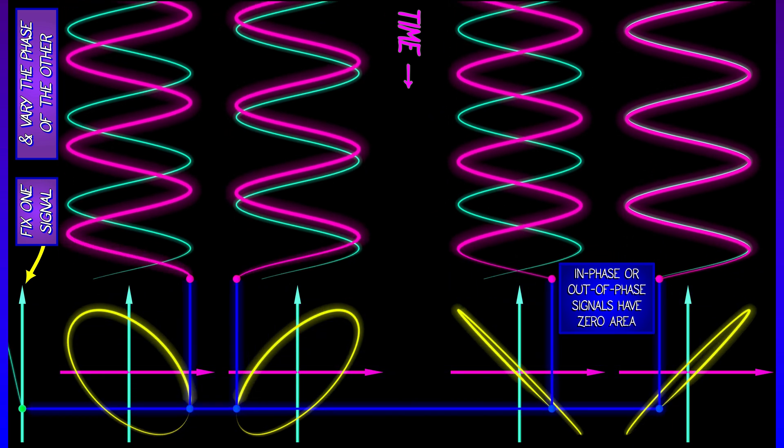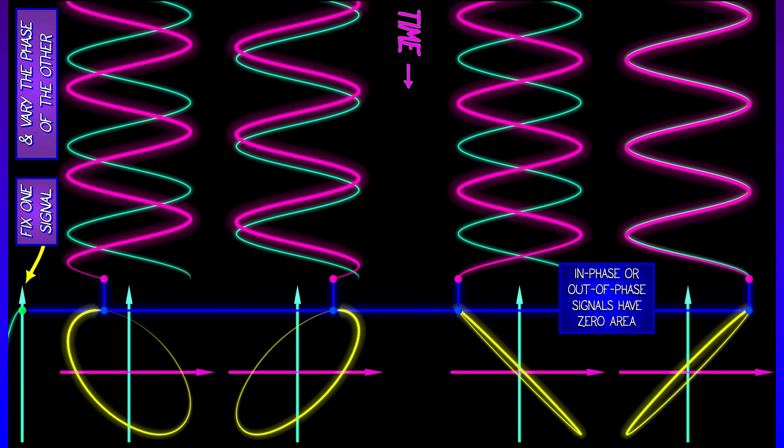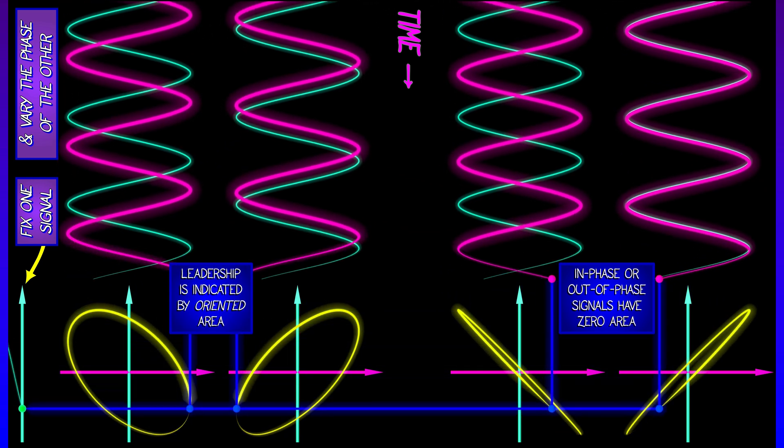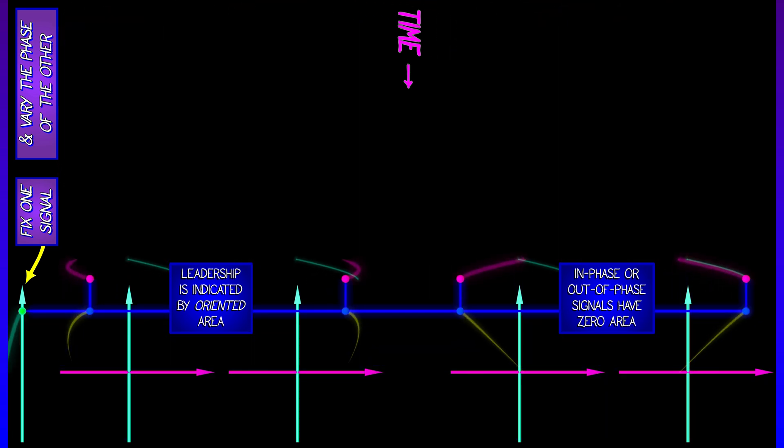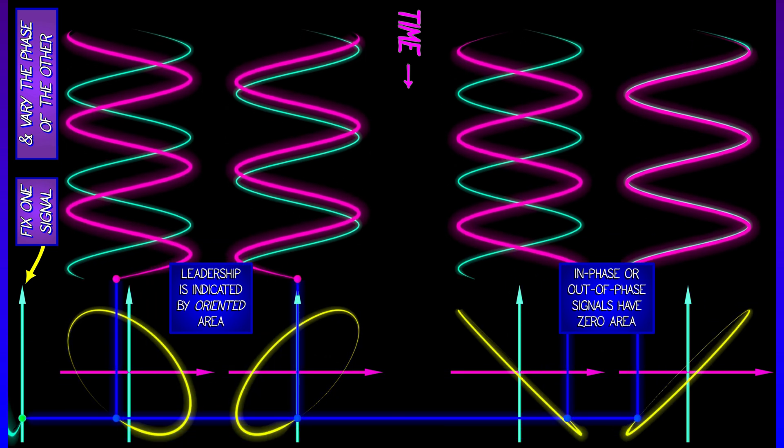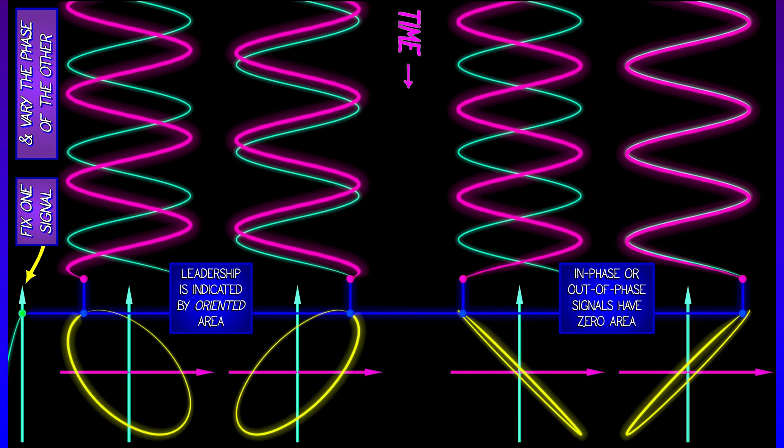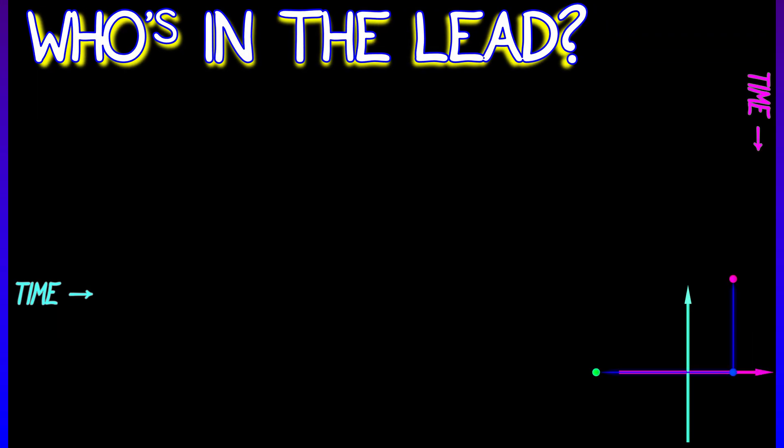But if they're not perfectly in or out of phase, if one is unambiguously leading the other, then what you're getting is an ellipse that is traced out in the plane. An ellipse either moving around clockwise or counterclockwise, and that orientation is telling you something about leadership.